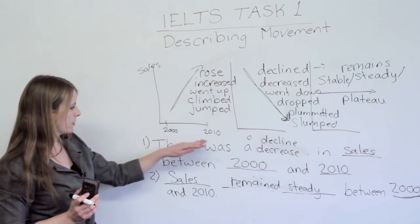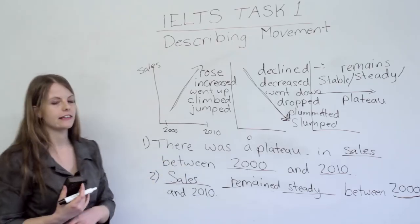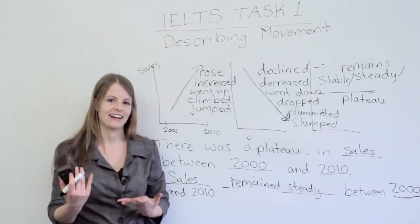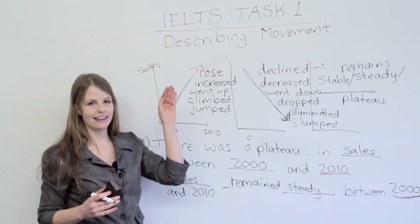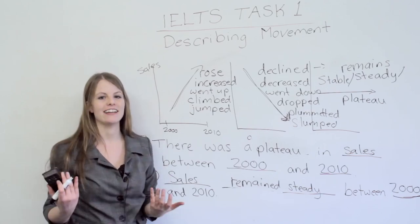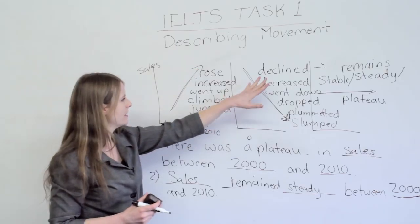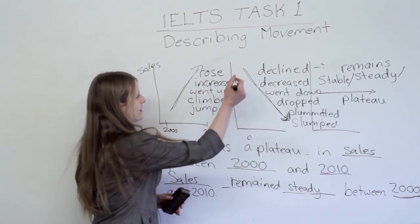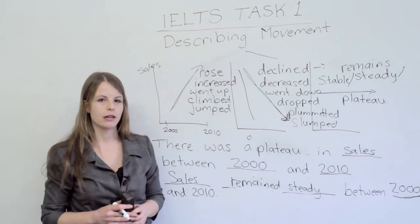When doing this part of the task, you don't want to reuse the same words again and again. If you keep writing 'the sales went up, then they went down, then they went up again,' the examiner will give you low marks for vocabulary. They want to see variety. Choose a couple of words to memorize — maybe 'increased' and 'rose' for upward, 'decreased' and 'dropped' for downward, and 'remained steady' for stable. Note that 'plummeted' means a very steep drop specifically.